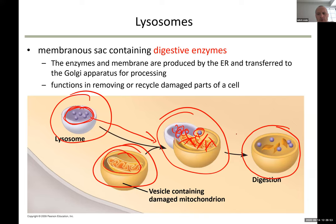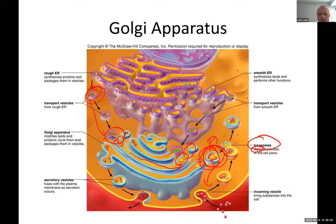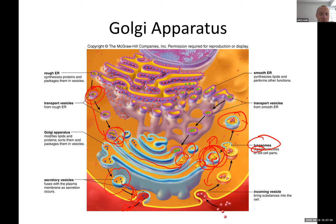The broken-down material is what is left from that mitochondrion. Lysosomes eventually fuse with the membrane and dump their contents outside the cell. Vesicles that fuse with the membrane and dump contents outside are called exocytotic — exo meaning outside, cyto meaning cytoplasm.